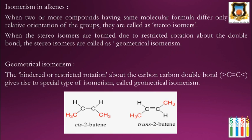When there is a carbon-carbon single bond, it is free to rotate. But when the carbon-carbon double bond is present, this rotation is restricted, and the isomers that arise due to this restricted rotation are called geometrical isomers. There are two types: cis and trans isomers. In cis isomers, the same groups are on the same side of the double bond. When the same groups are on the opposite side, they are called trans isomers.